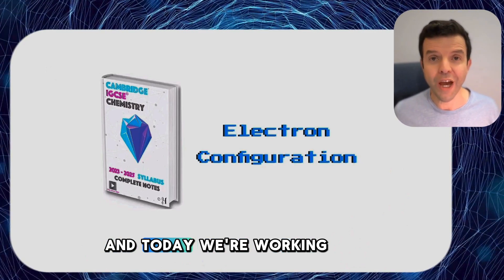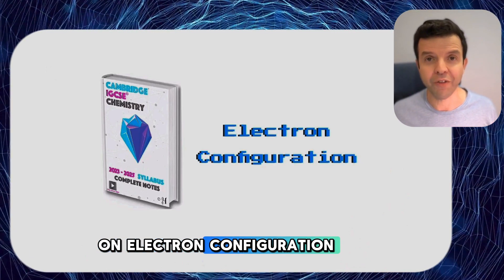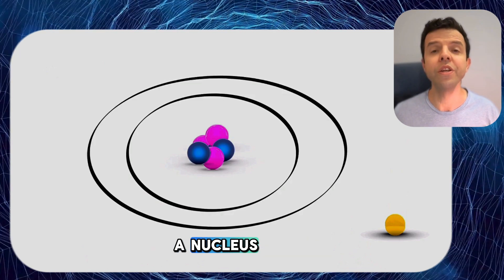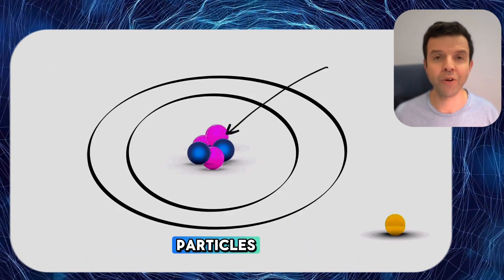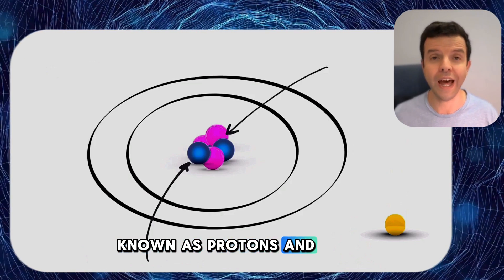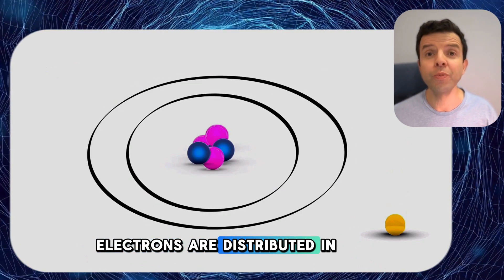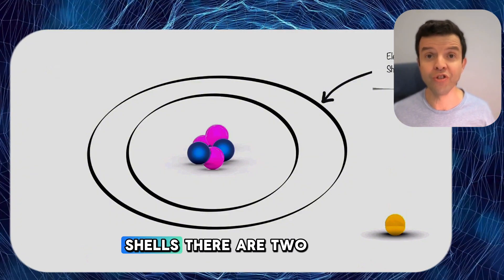This is IGCSE Chemistry and today we're working on electron configuration. Every atom comes with a nucleus and that nucleus has two types of subatomic particles known as protons and neutrons. Electrons are distributed in what is known as electron shells.